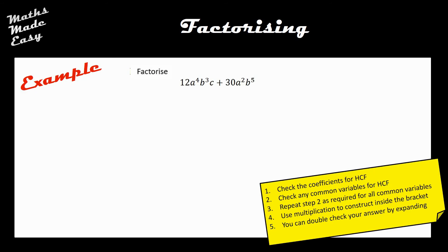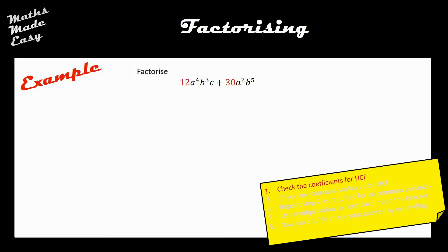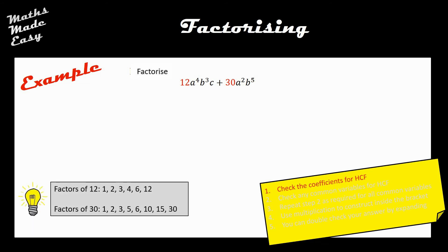In this example, which is quite a difficult one, we've got 12a⁴b³c + 30a²b⁵. I've added a step-by-step guide which we're going to talk through. To start off, we check the coefficients for their highest common factor — step one. Coefficients are the numbers being multiplied by the variables — the a's, b's, x's. So 12 and 30: their highest common factor is 6.